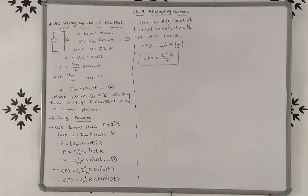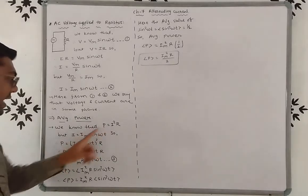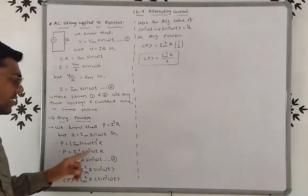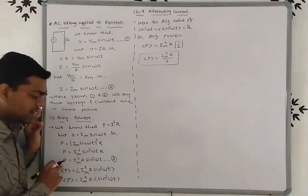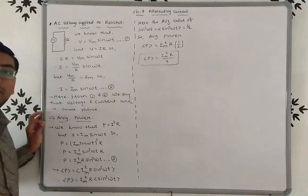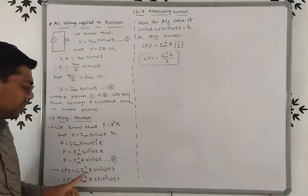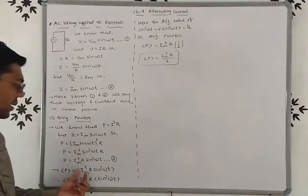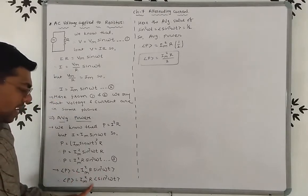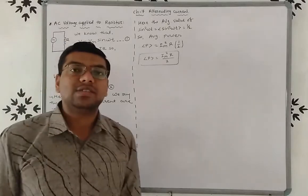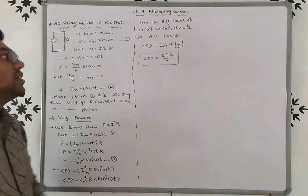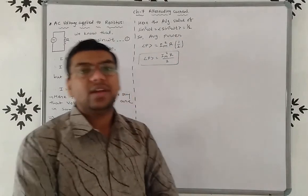Once again: power P = I²R, and I = Im sin ωt, so P = Im² sin² ωt · R. Taking the average, average power = Im² · R · (average of sin² ωt) = Im² · R · (1/2), so average power = Im²R/2.